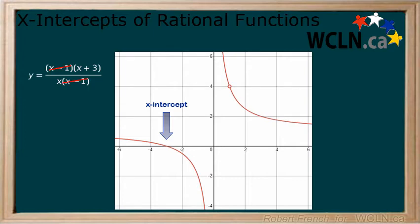We can ignore the first because it is a point of discontinuity as there is an x minus 1 factor in the denominator as well. That leaves us with a factor of x plus 3. When we solve x plus 3 for 0, we get x equals negative 3, the location of the x-intercept.